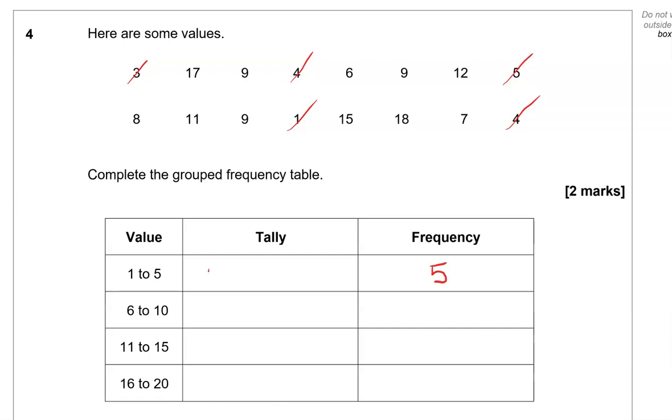And we'll show you the tallies. 1, 2, 3, 4, 5. 6 to 10, we've got 1, 2, 3, 4, 5, 6. So it's 6 of them. 1, 2, 3, 4, 5, 6.